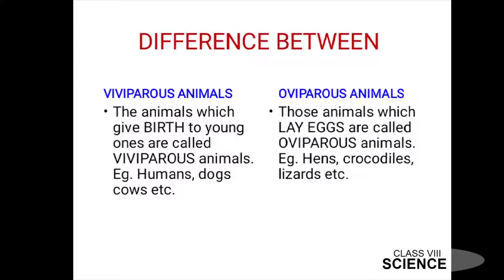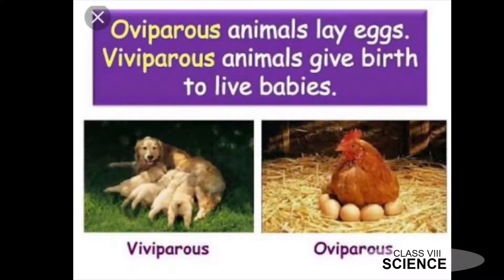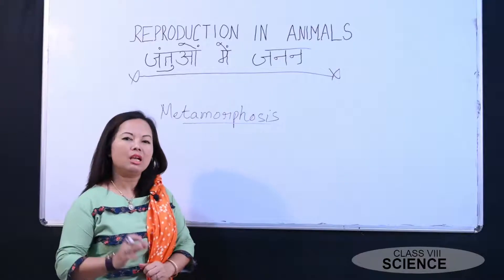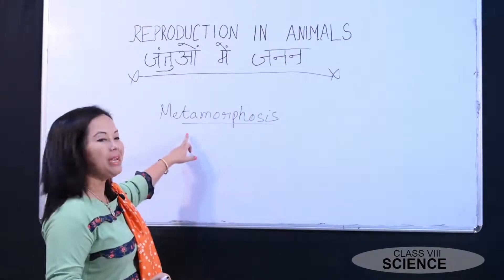Viviparous animals give birth to their young ones directly — examples include human beings, dogs, and cows. Oviparous animals lay eggs — examples include hens, crocodiles, and lizards. Now we will talk about what is metamorphosis.